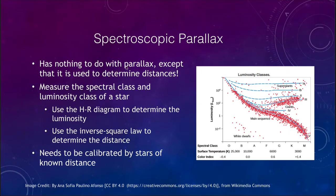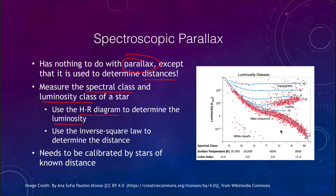Spectroscopic parallax has nothing to do with parallax — it is only called that because it is used to determine distances. What we do is measure two things: the spectral class of a star and the luminosity class of the star. Once we do that, we find its position on the HR diagram, use that to determine the luminosity, and then use the inverse square law to determine the distance to the star.